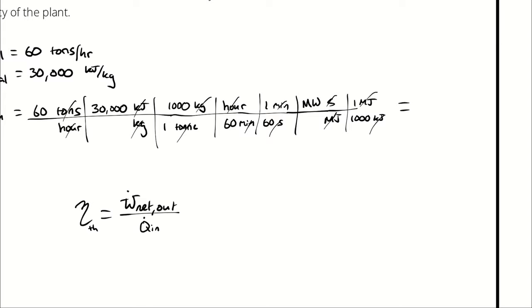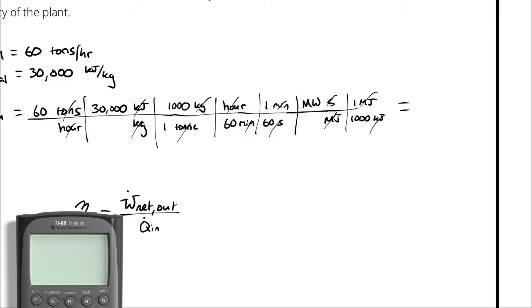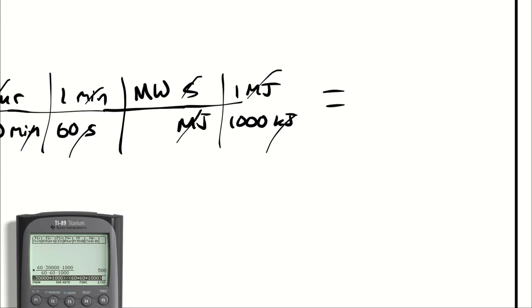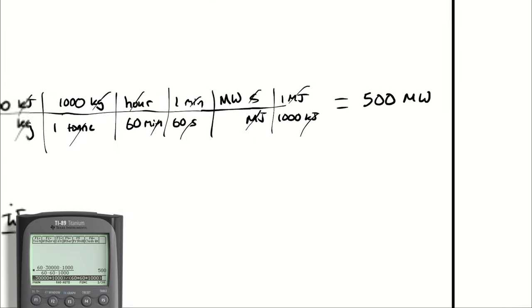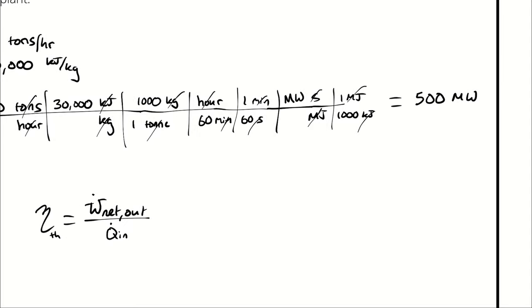So for that, I will use my calculator, which we have avoided using as long as possible. We need you to take 60 times 30,000 times 1,000 divided by 60 times 60 times 1,000. Calculator says 500 megawatts.